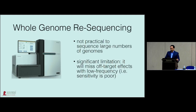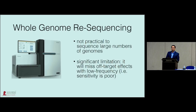One obvious approach for looking at genome-wide activity of engineered nucleases is whole genome sequencing. But even with today's next-gen sequencing technology, it's not practical to sequence large numbers of genomes. You can get a whole genome sequence with 50X coverage, but if you're trying to interrogate millions or billions of genomes, it's simply not practical. A significant limitation is that these approaches will miss low-frequency off-target effects — you can really only do this in clones, not in cell populations.